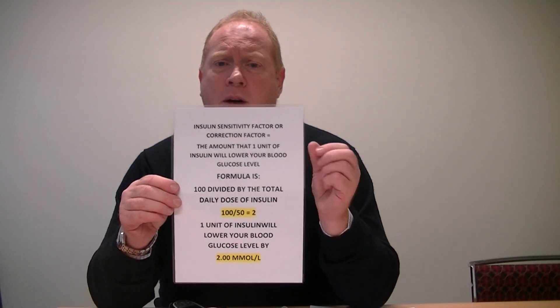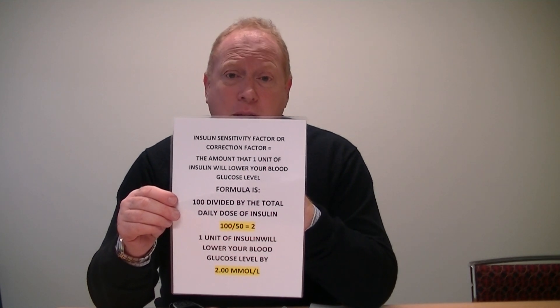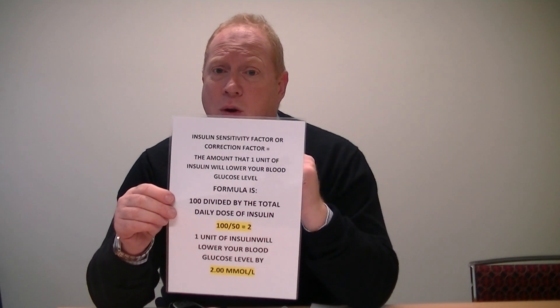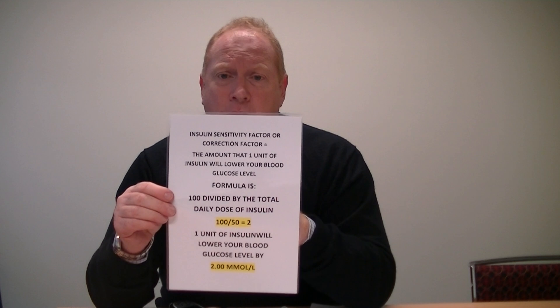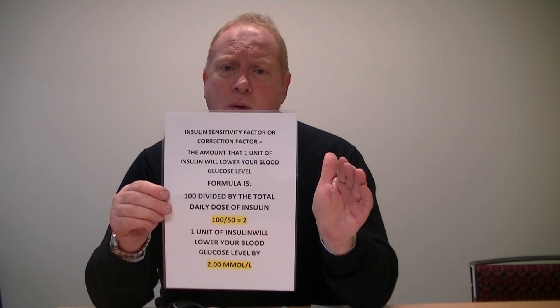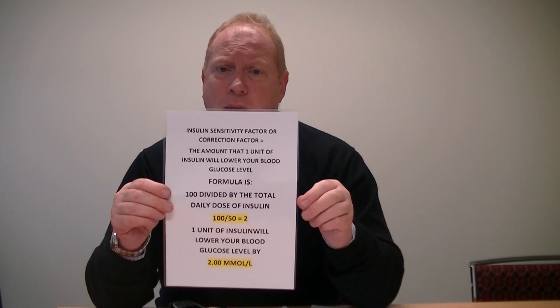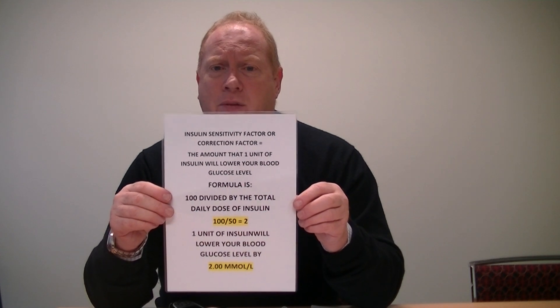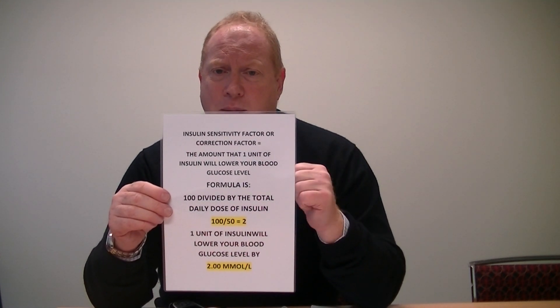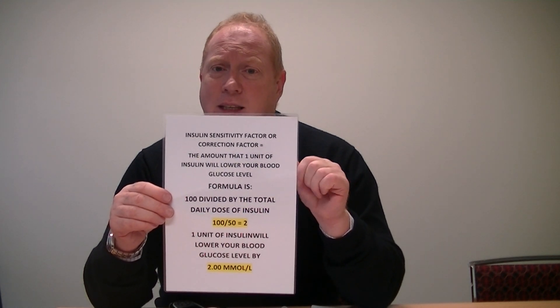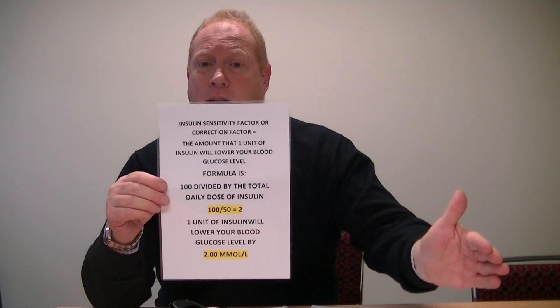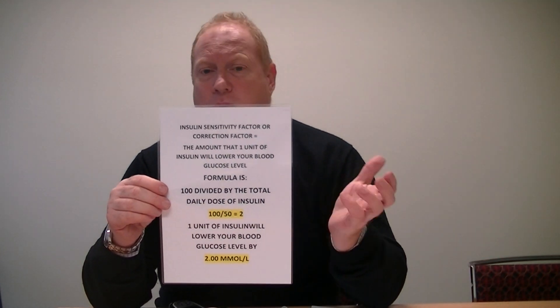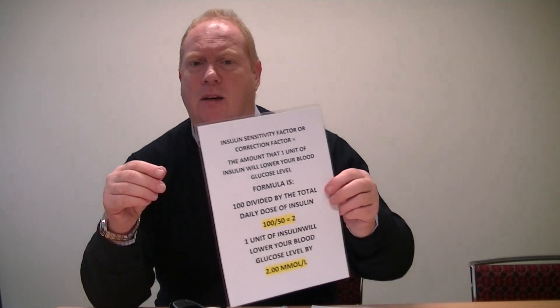The other formula is the insulin sensitivity factor or correction factor — called the 100 rule. That's the amount in millimoles that one unit will drop your blood glucose level. So 100 divided by the total daily dose equals 2: one unit will lower blood glucose by 2 millimoles. For example, if your blood glucose is 12 before lunch and your target is 6, you need to correct 6 millimoles — 6 divided by 2 is 3 units — plus 6 units for the 60 grams, equalling 9 units in total.